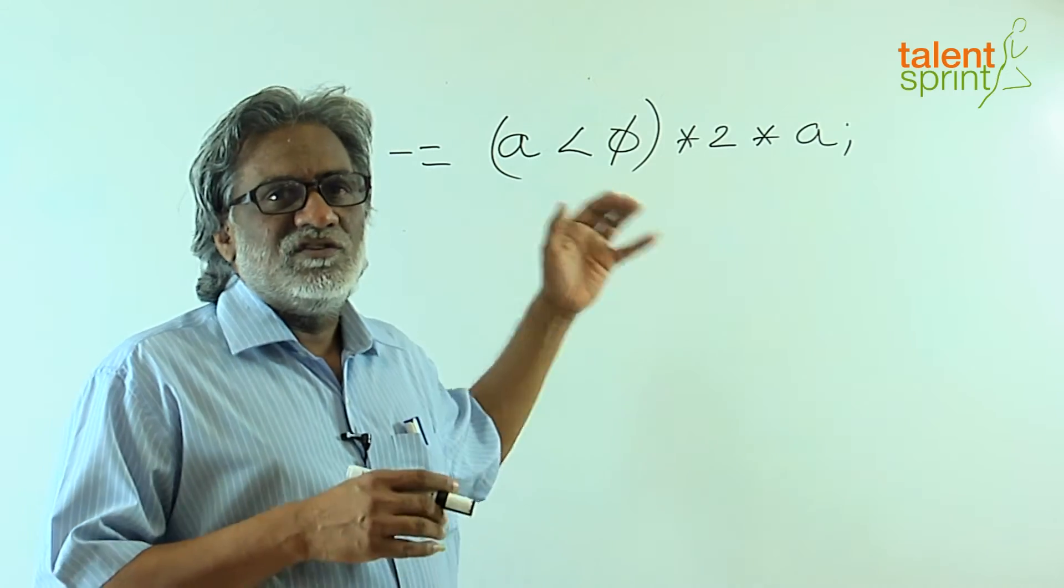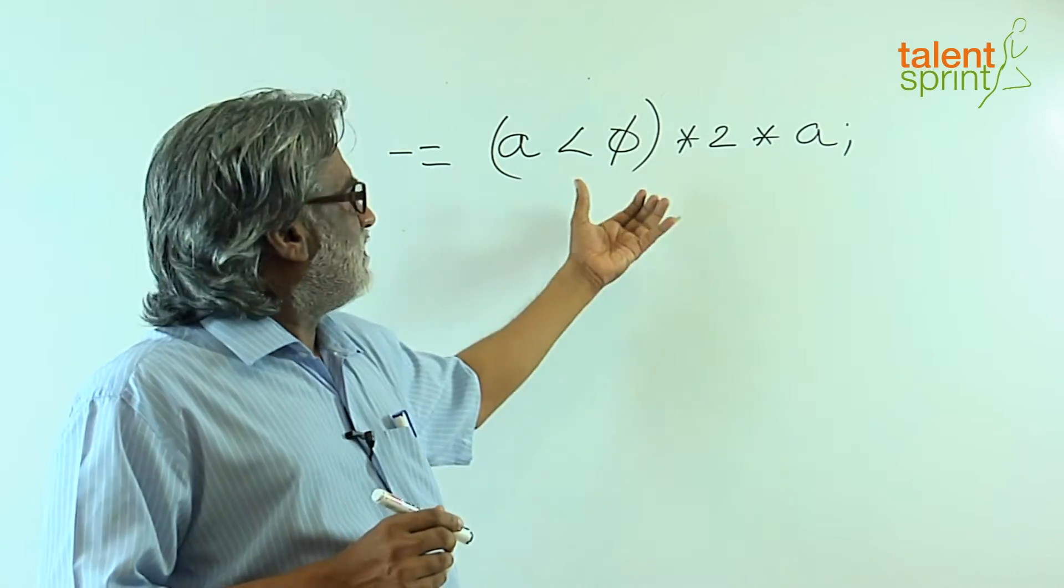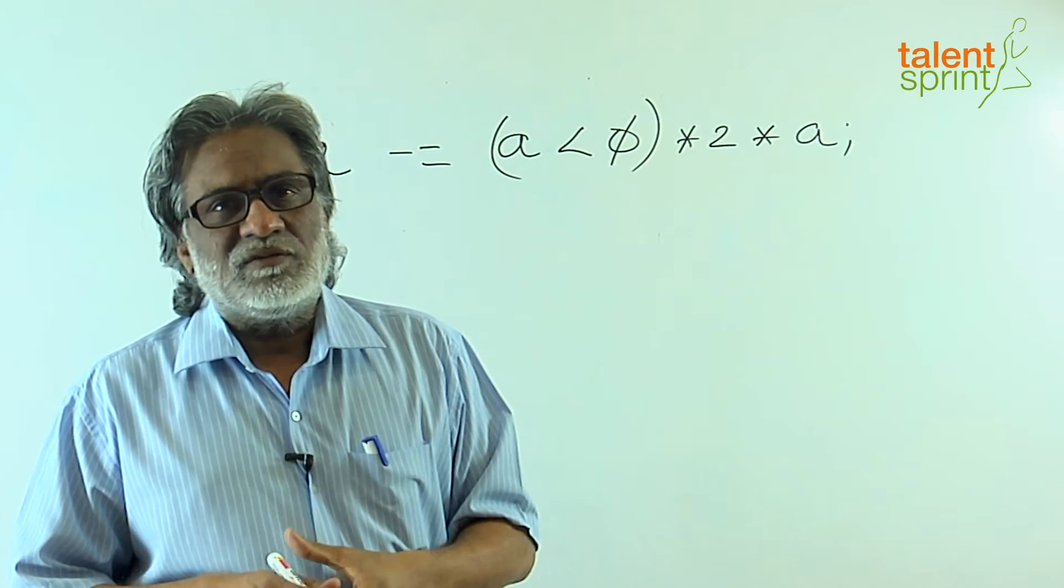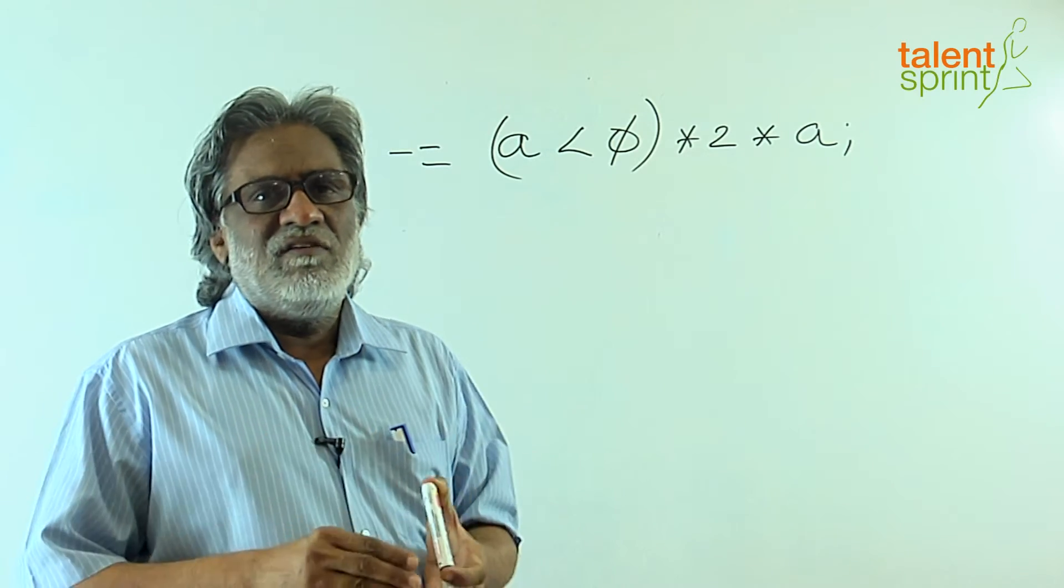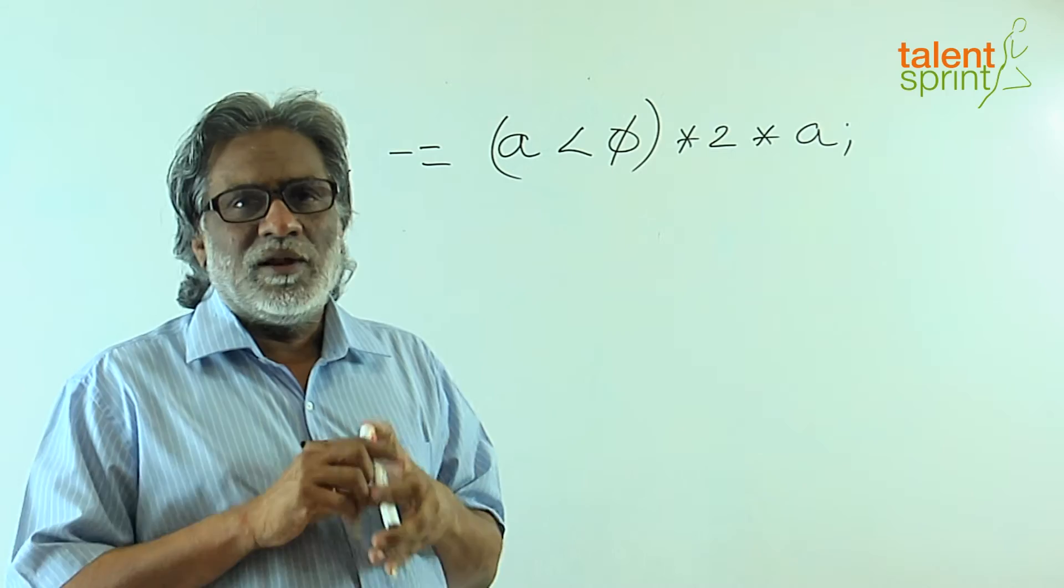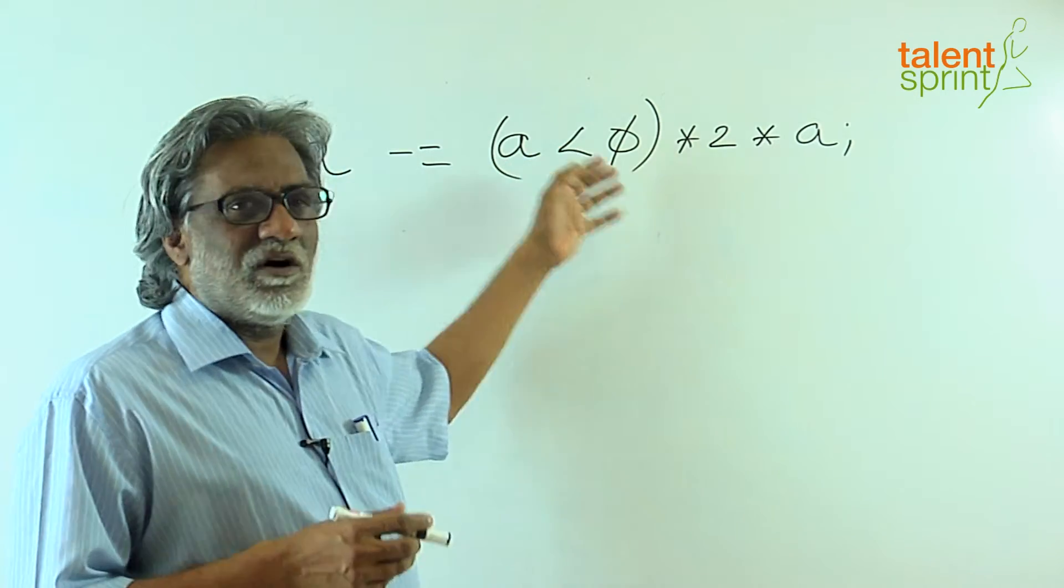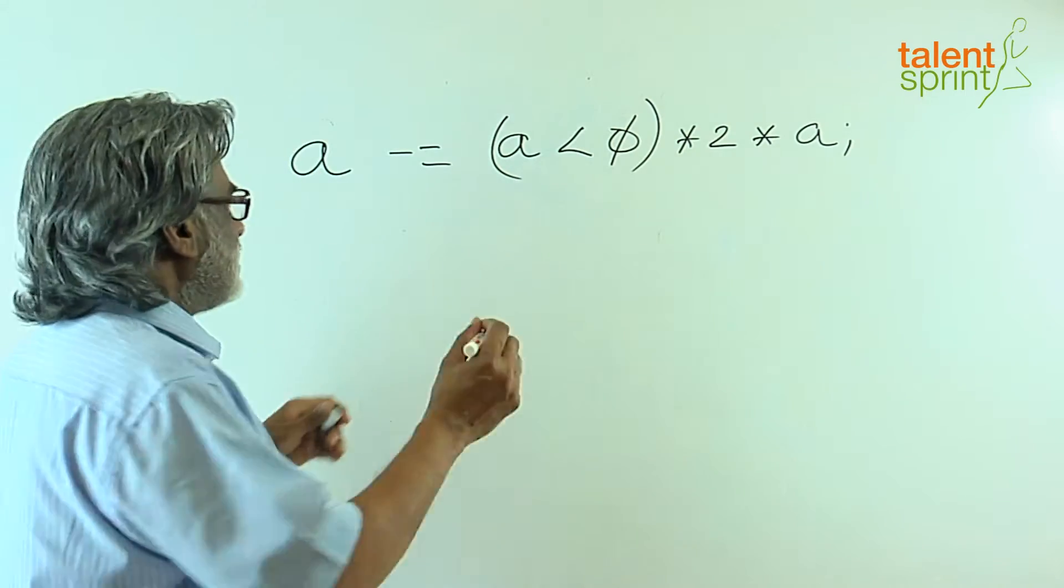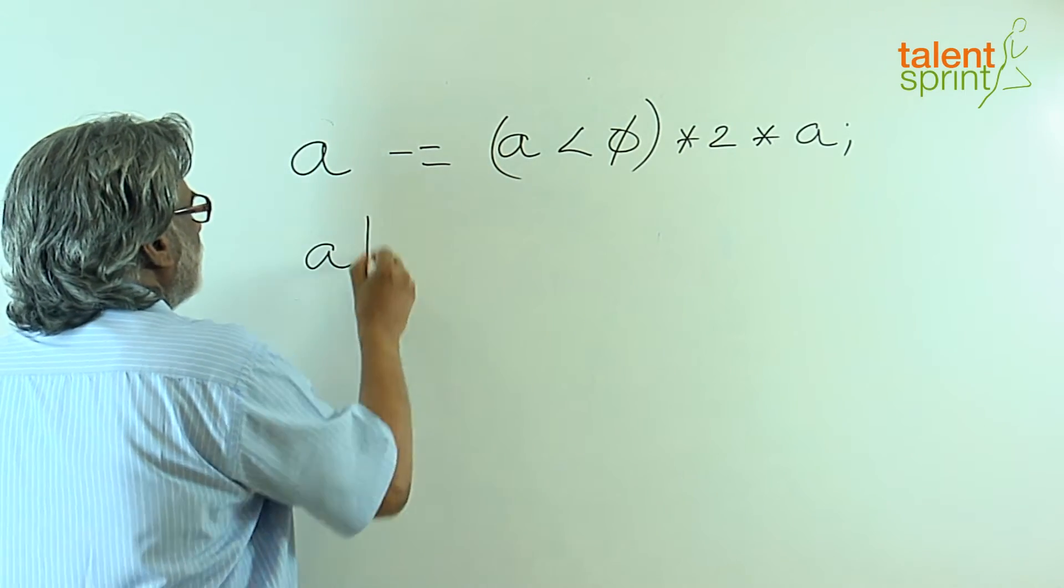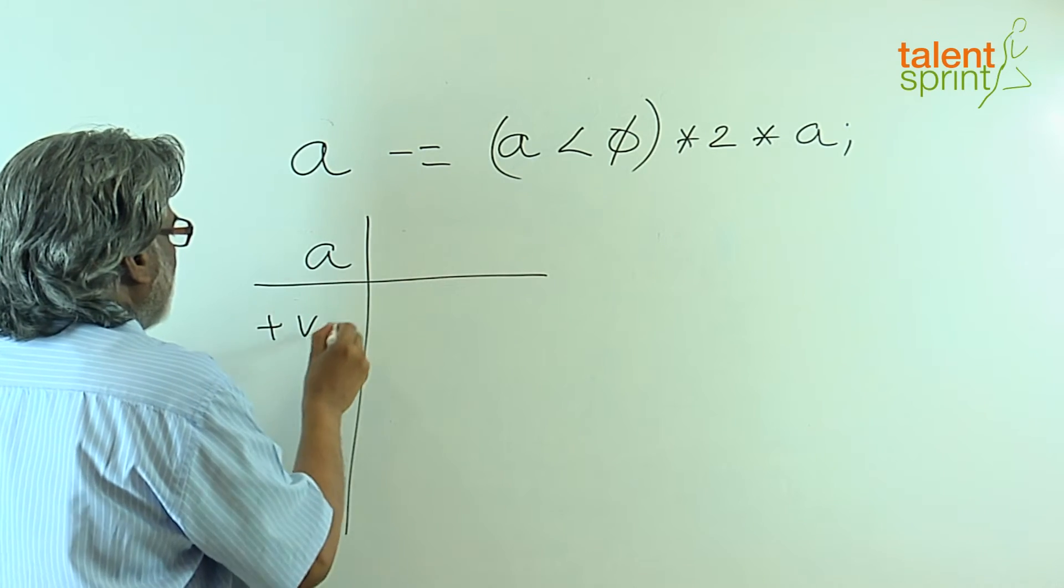By the way, this is C code, so a less than 0, while being a Boolean expression in C, will and can take numeric values. So there are two cases: a is positive or a is negative.